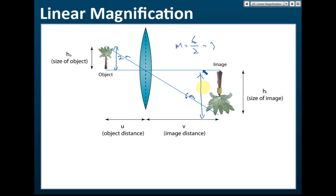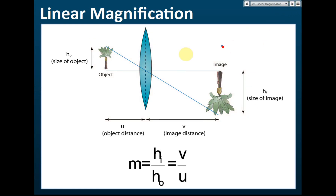If the image is diminished, the linear magnification will be smaller than one — like 0.5 or 0.2. If linear magnification equals one, it means same size. If it's bigger than one, the image is magnified; smaller than one, the image is diminished. The equation for linear magnification is m equals hi over ho, where hi is the height of the image and ho is the height of the object.